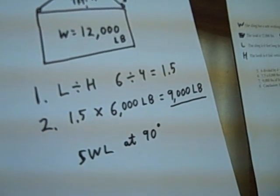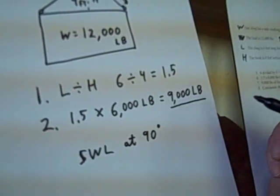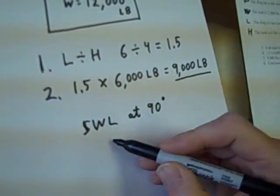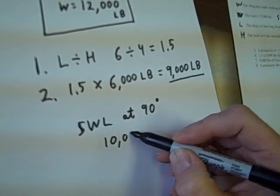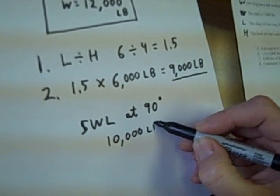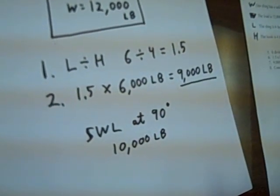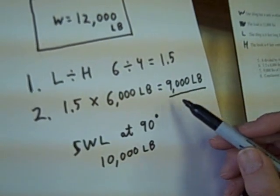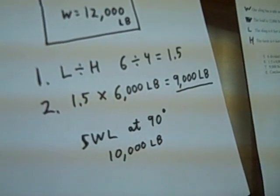So in our case, 9,000 pounds, if the safe working load at 90 degrees was 10,000 pounds, this would be a safe lift. Because the force is not more than the rating of the safe working load.